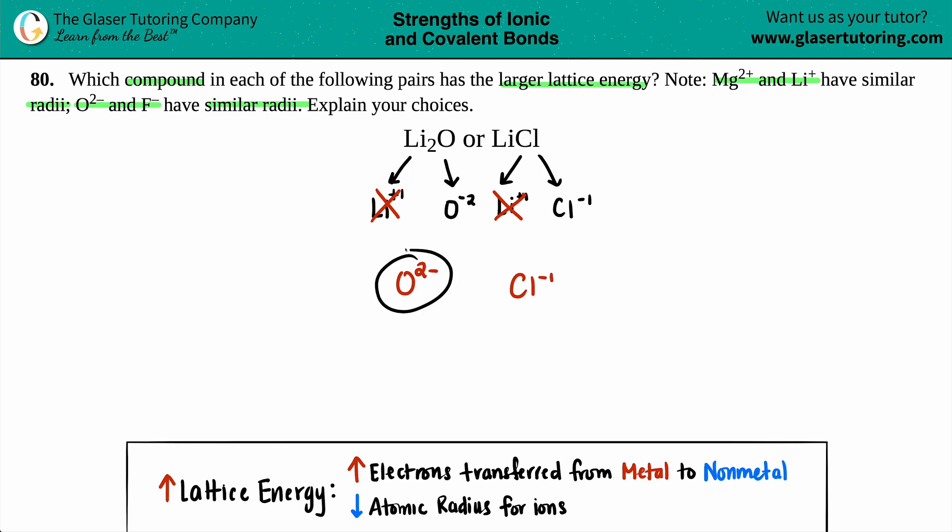When oxygen is in this ionic compound, this 2- means that it will receive—because negative means gain—it's going to gain two electrons. So there had to have been two electrons that were transferred from the lithiums. Cl has a -1 charge, so this means it's only going to gain one electron from the one lithium.